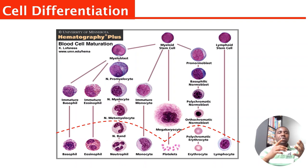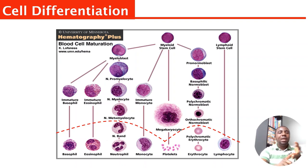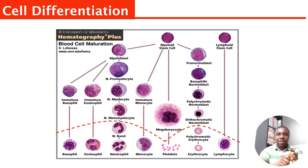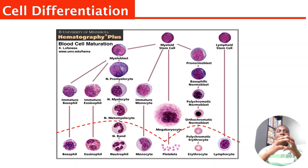What are the blood cells? Red cells, white cells, and platelets. Under the white cells you have subtypes which are neutrophils, basophils, eosinophils, monocytes, and lymphocytes. So now let's look at their differentiation.